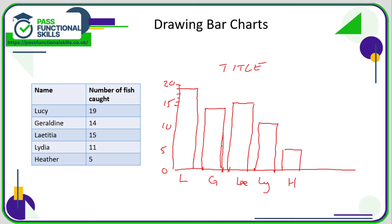One thing we haven't done is actually label the axes. I probably wouldn't bother labeling the horizontal axis, though I suppose you could label it 'name of fisherman'. Up the side I would put 'number of fish caught'.